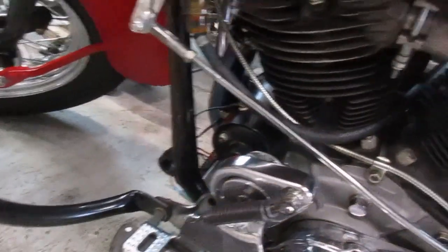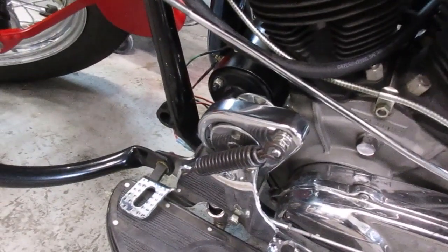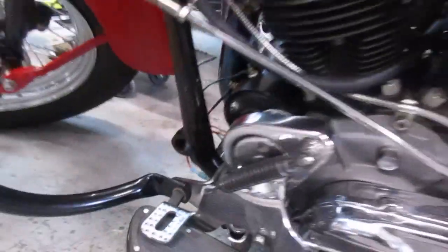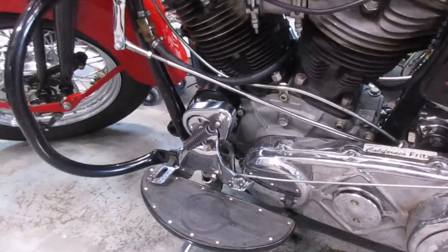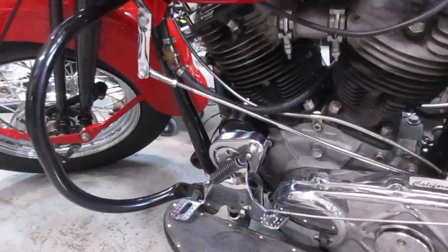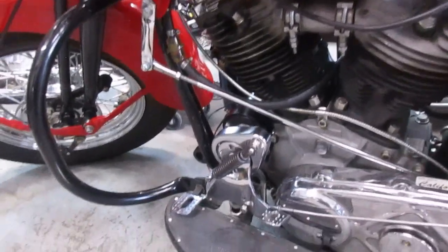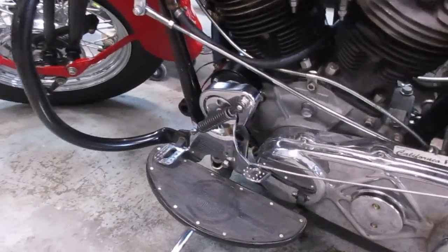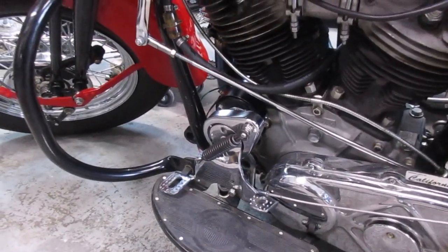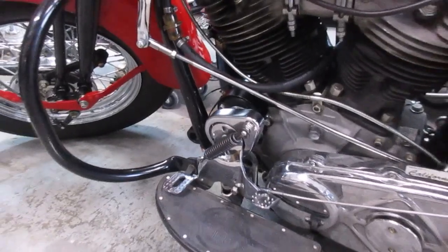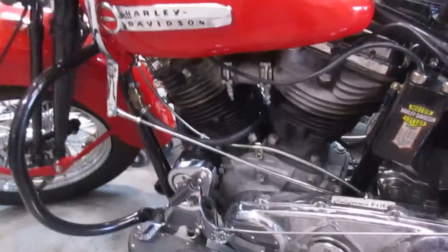Between the generator and the regulator, the generator puts out about 14 volts on the armature side. You have a regulator - this has an electronic regulator on it. A lot of them have a mechanical regulator. What it does is it regulates the field ground. The armature will put out 14 volts and the more you ground it, the more voltage goes to the battery.